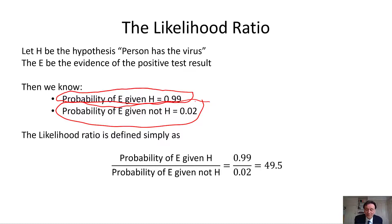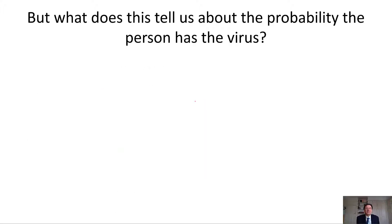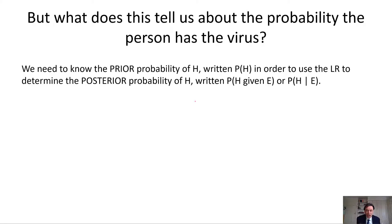But what does that mean? This means that we're nearly 50 times more likely to see a positive test result in a person who has the disease compared to a person who doesn't. And that seems to be quite convincing evidence. But what does it actually tell us about the probability that the person has the virus? Unfortunately, unless we know the prior probability of H — written as P(H) — then the likelihood ratio alone doesn't determine the posterior probability of H, which we write as P(H|E). That's the revised probability given the evidence.